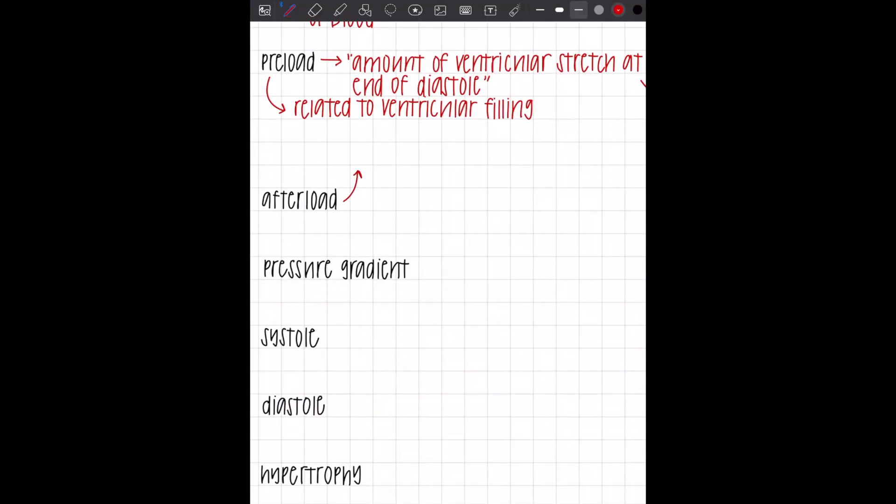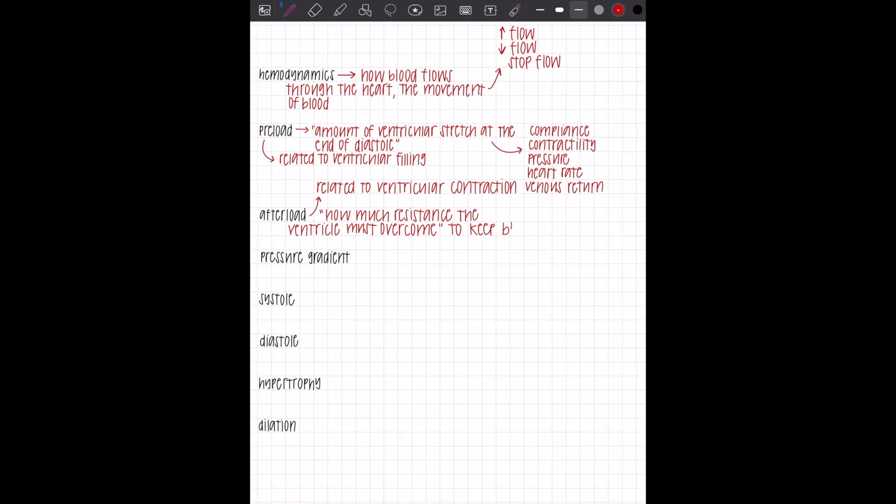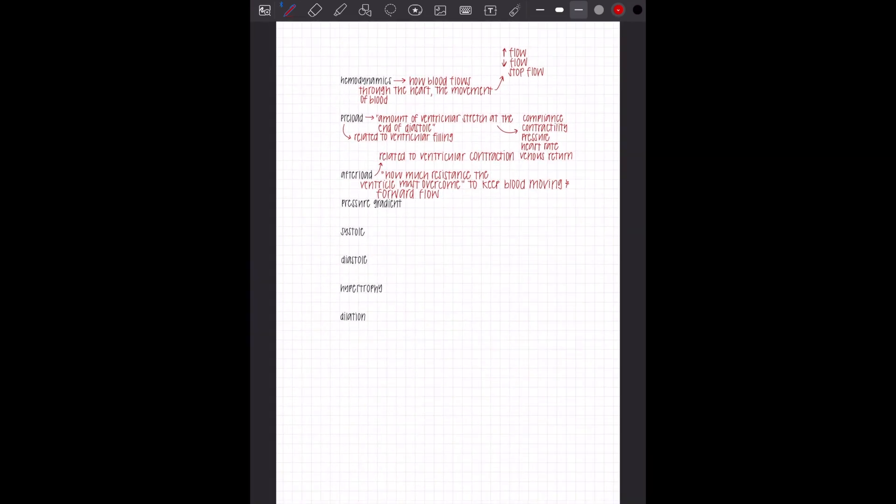The next one we're going to talk about is afterload, the opposite of preload. Preload is for filling and afterload is about ventricular contraction. Specifically, this is about how much resistance the ventricle has to overcome in order to keep forward flow of blood. Normally blood goes from, for instance, left ventricle LV to AO. So how much does the left ventricle have to overcome of force and resistance that's in the aorta to keep blood pushing from LV to AO, instead of it coming back and pooling?